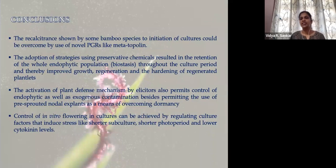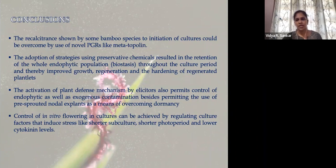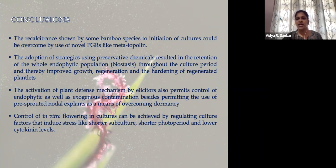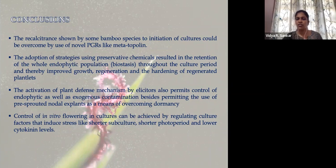In conclusion, we found that we can overcome the recalcitrant nature of bamboo by using novel plant growth regulators like metatopolin. We adopted strategies using preservative chemicals that result in reduction of contamination from the endophyte population through biostatic means, and these also improved growth and regeneration and hardening of regenerated plants. Activation of plant defense mechanisms through elicitors also permitted the control of endophytes as well as exogenous contamination. Control of in vitro flowering in cultures can be achieved by regulating culture factors such as shorter culture periods, shorter photoperiods, and lower cytokinin levels.